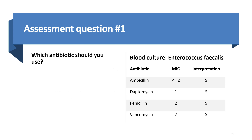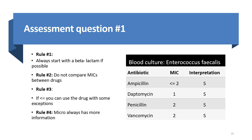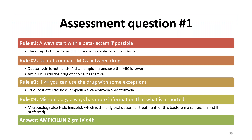To illustrate interpretation using a case study: a blood culture grew Enterococcus faecalis with all antibiotics sensitive. Applying rule 1, start with ampicillin as the drug of choice, with other choices like amoxicillin and vancomycin also available. Applying rule 2, do not compare MICs. Applying rule 3, ampicillin is preferred over vancomycin or daptomycin. Rule 4: the microbiology lab may report sensitivity to linezolid also, which is a last-resort option, but ampicillin remains the drug of choice.